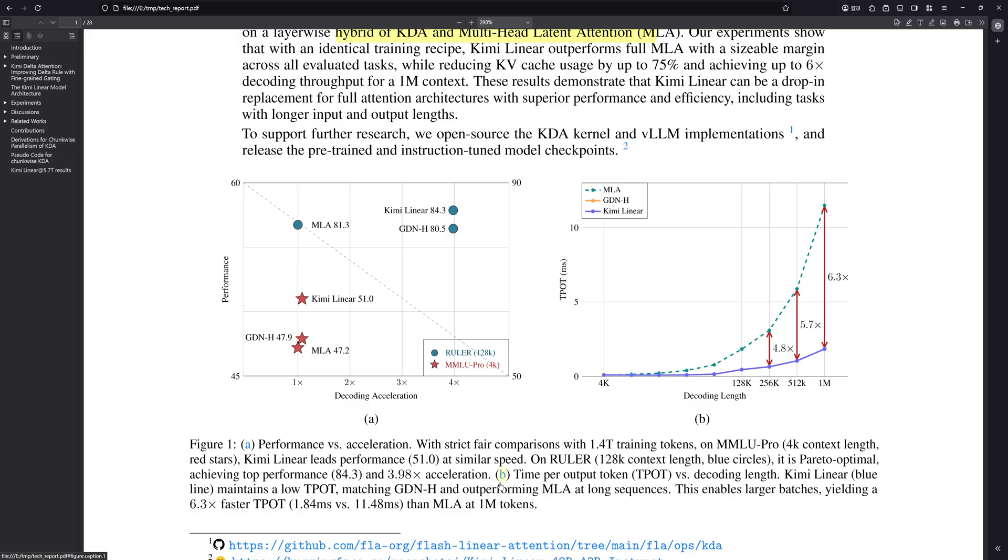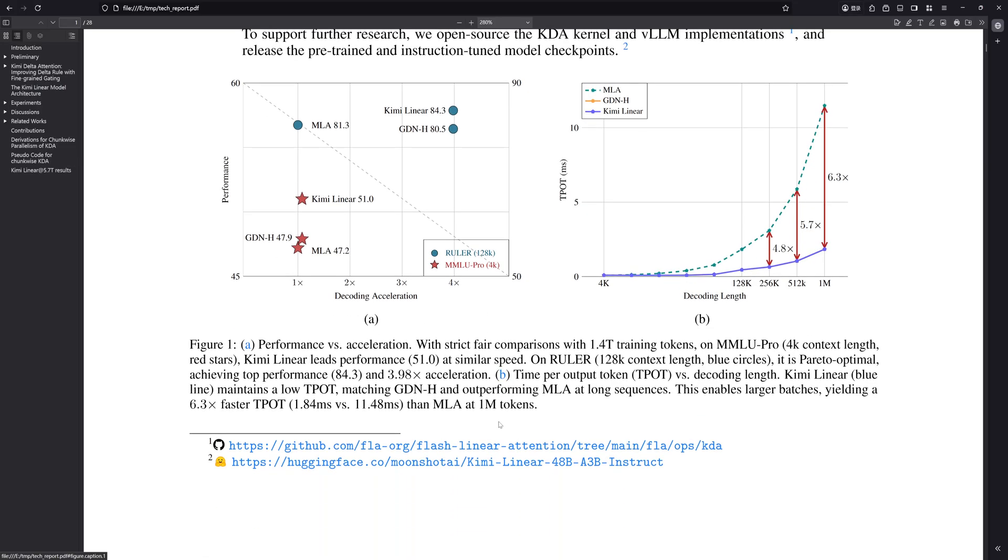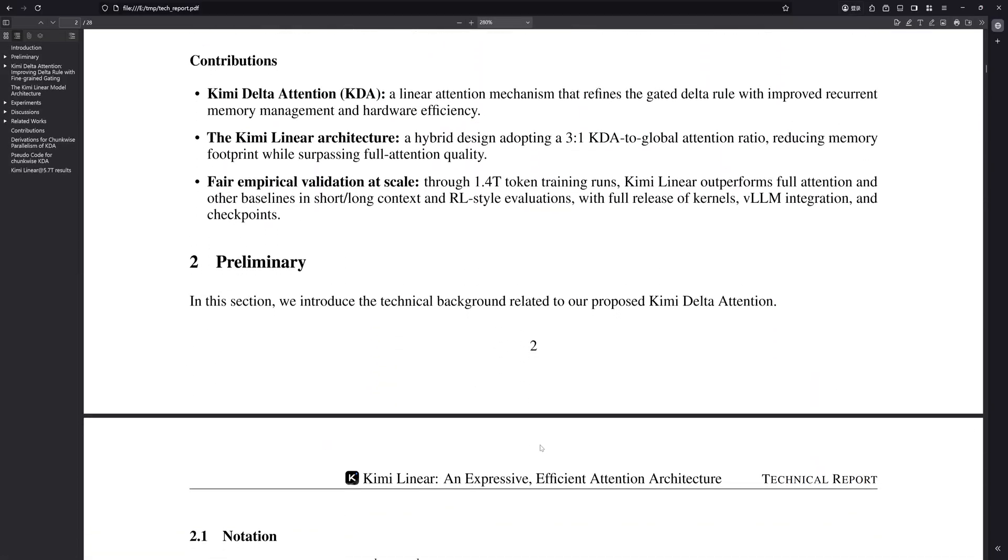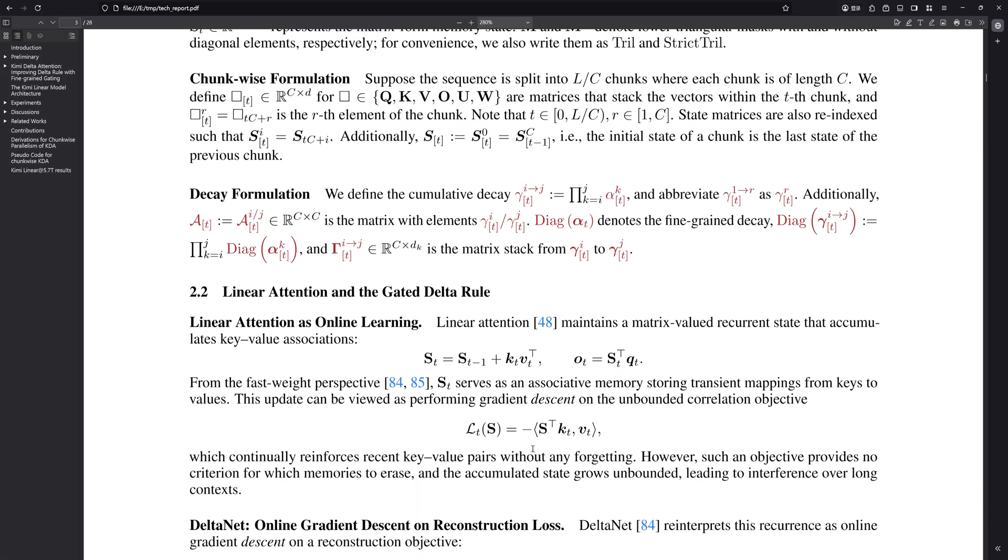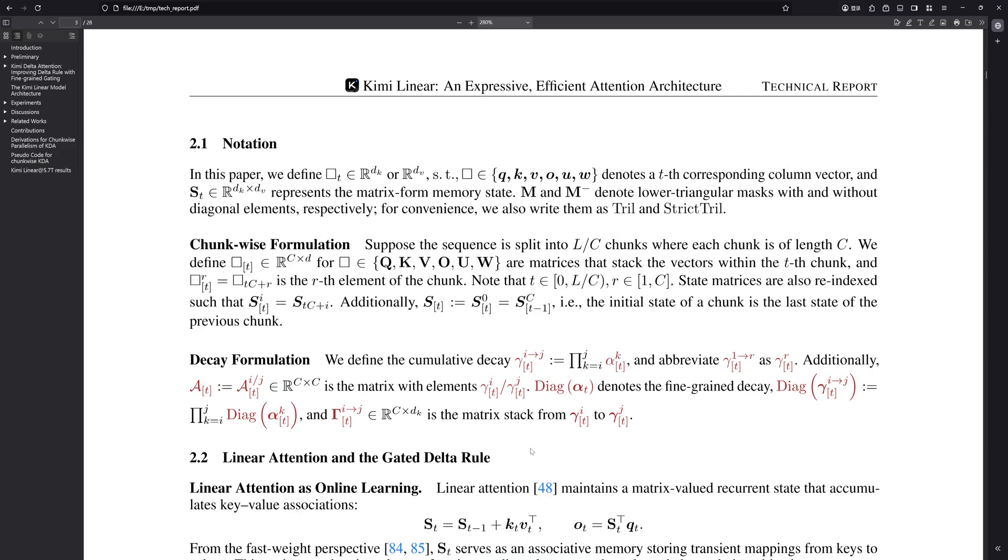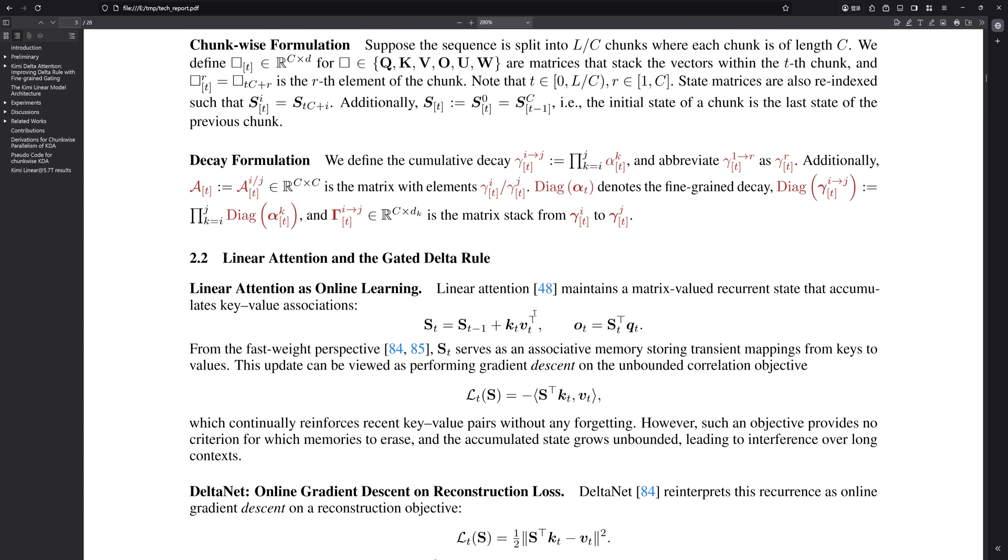Okay, so my position really hinges on what makes KDA different from, say, its predecessor, gated delta net, or GDN. Linear attention, at its heart, works a bit like an RNN, right? It accumulates information into a fixed-size state. Now, previous attempts like GDN used a pretty coarse gate, maybe a single scalar value per head, like a master dimmer switch for that head's memory. KDA scraps that. It brings in this channel-wise gating. So instead of one switch, imagine an independent volume knob for every single feature dimension in that memory state.